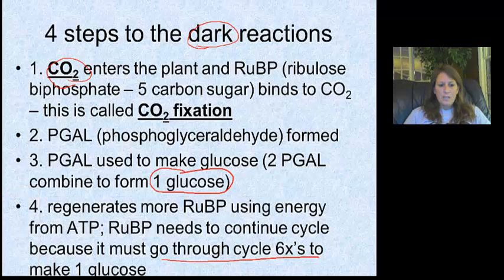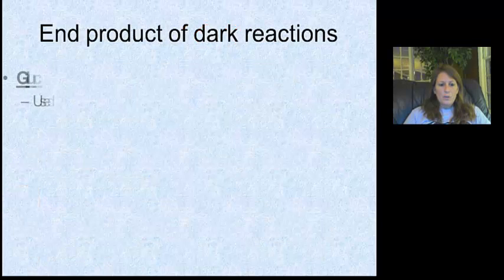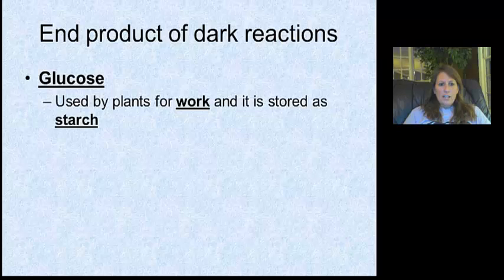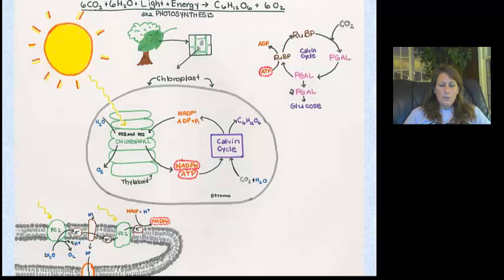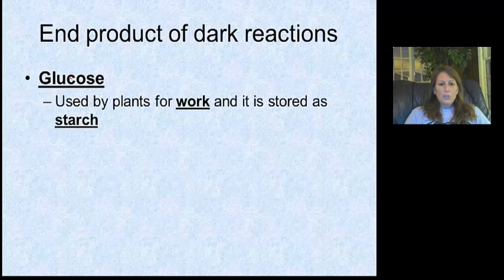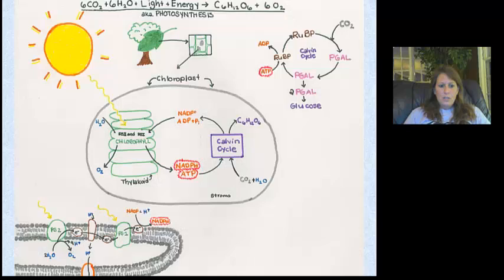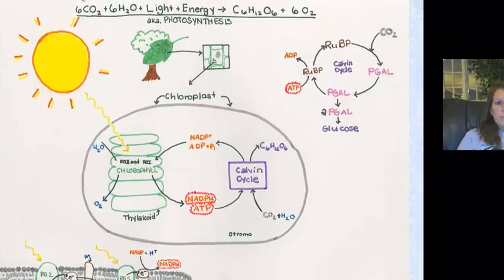The products of the dark reactions include glucose. Glucose is not only used for the plant's daily work but is also stored — and that's what we eat when it's stored as starch. So let's look at all of this together with the full equation and the Calvin cycle, which is also called the dark reactions.